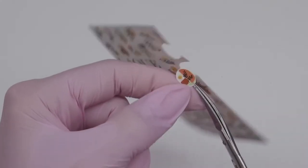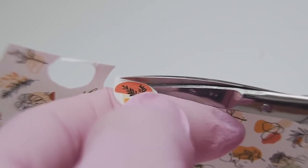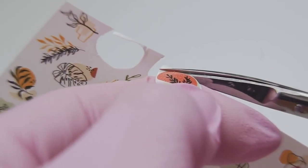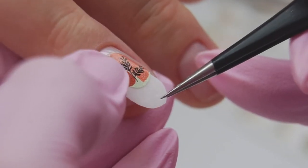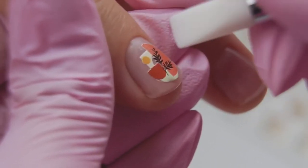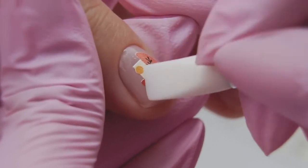I will stick the slider design on the tacky layer of color. I cut out the image, put it on a wet tissue, and wait for the paper to get soaked. Then I transfer the slider to the nail plate and smooth it out with a silicone brush to get rid of the bubbles.